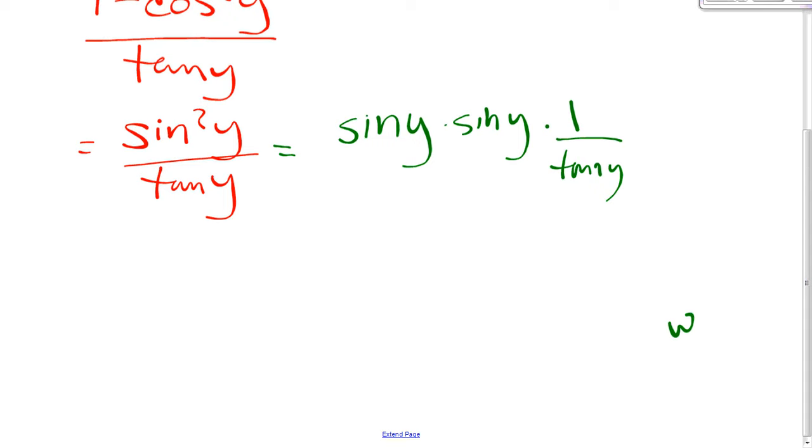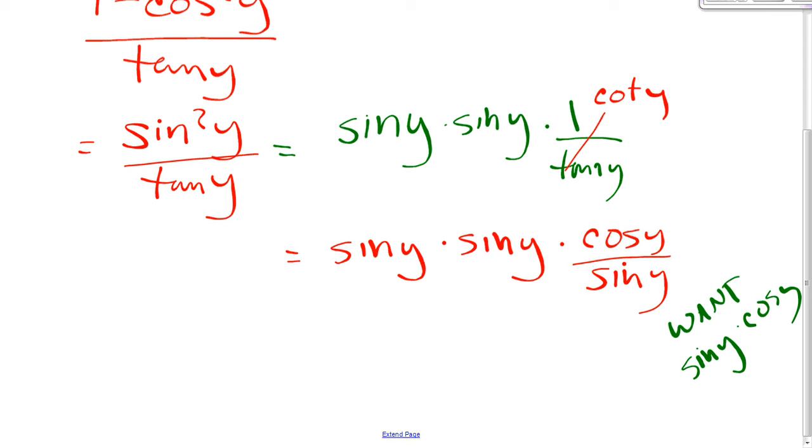So we want siny times cosy. So now the question is, how can I mess with sine and tangent? Well, let's write it in terms of sine and cosine. This I could rewrite as cotangent. And then when I set that up, let's write that in terms of sine and cosine. Now look what happens. You should be able to get to this step on your own.